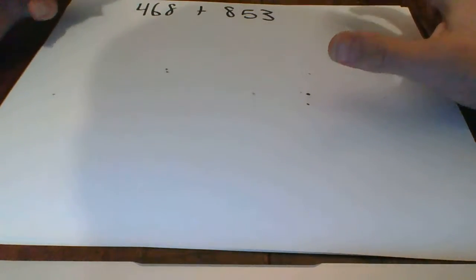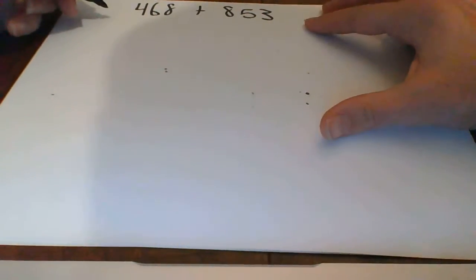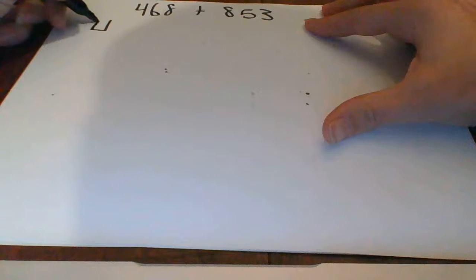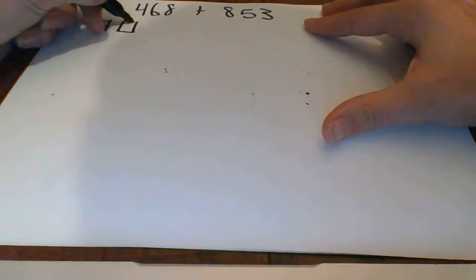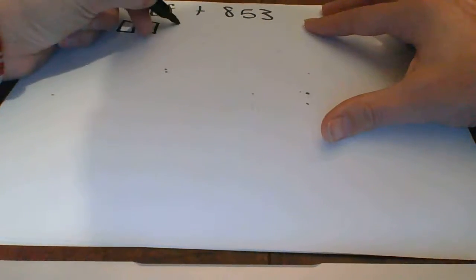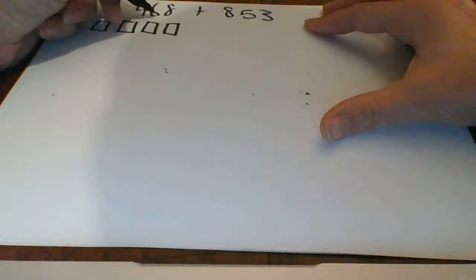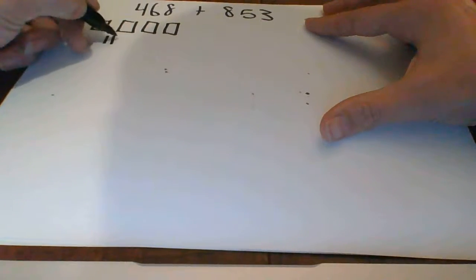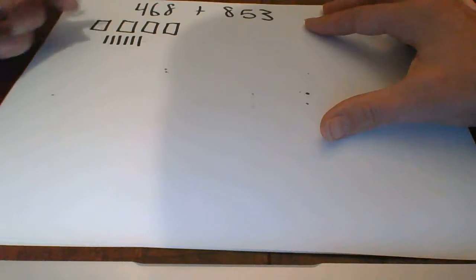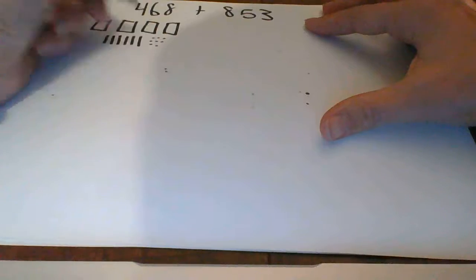So the first thing I want to do is I want to look at 468. I'm going to actually draw this out. I'm going to draw 400 blocks to represent 400, 6 longs to represent our tens, and then 8 ones.